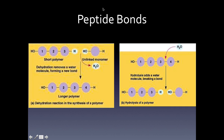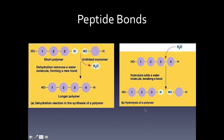Peptide bonds bring amino acids together to form proteins. There are two key types of reactions to know: dehydration reactions and hydrolysis reactions. In a dehydration reaction, two separate monomers are joined by removing a water molecule, forming one longer polymer. In hydrolysis, the opposite occurs — one polymer has water added to it, breaking it apart into two separate pieces.